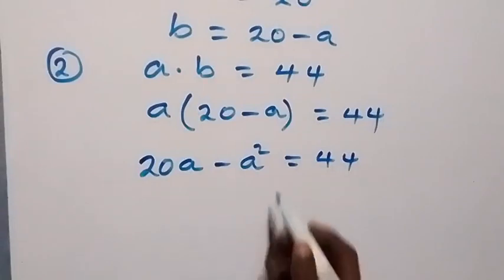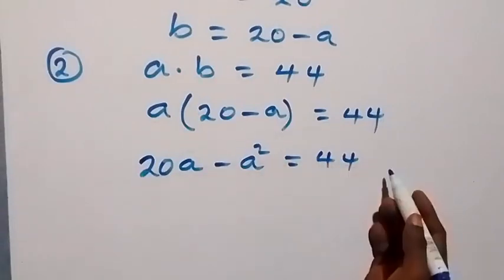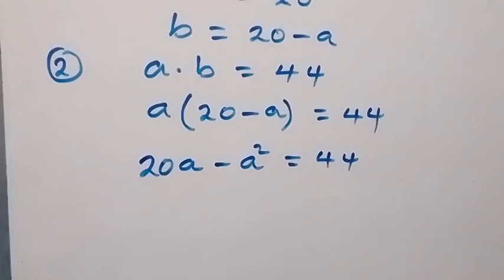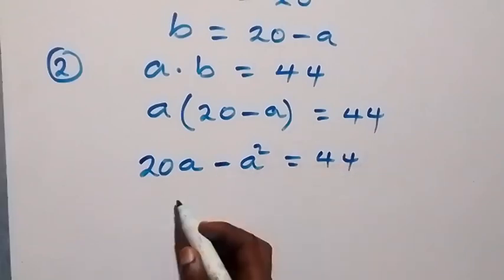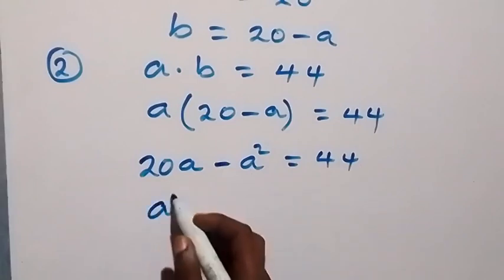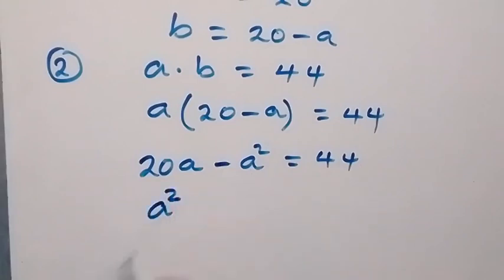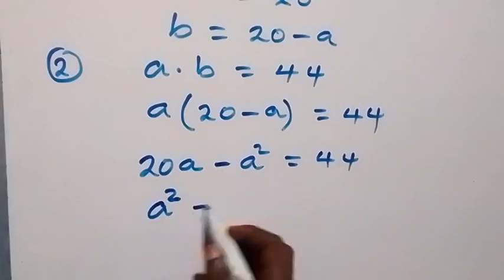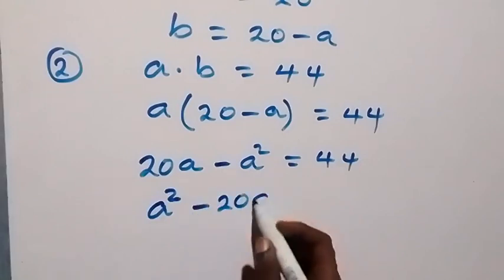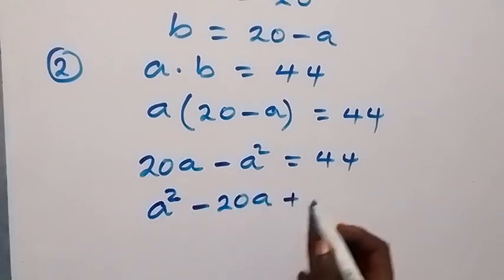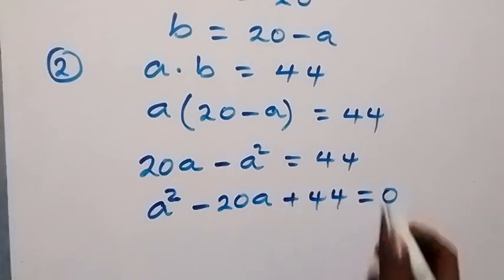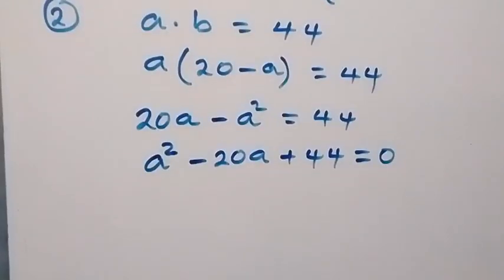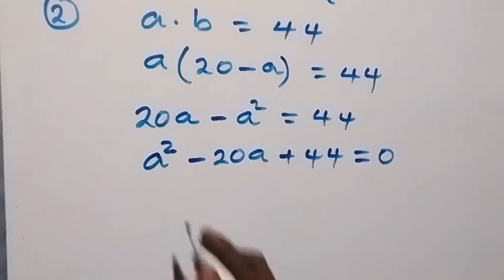We can use A to open the bracket and this becomes 20A minus A squared equals to 44. Then we can take everything to one side and rearrange to form a quadratic equation. When minus A squared comes here we have A squared, then plus 20A becomes minus 20A, then we already have plus 44, then equals to 0. So we have a quadratic equation in terms of A.